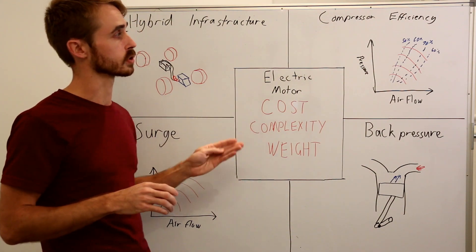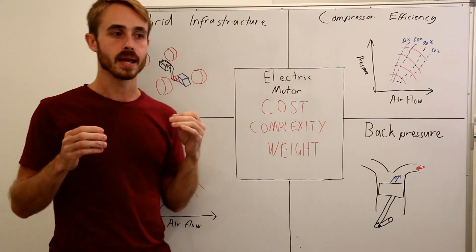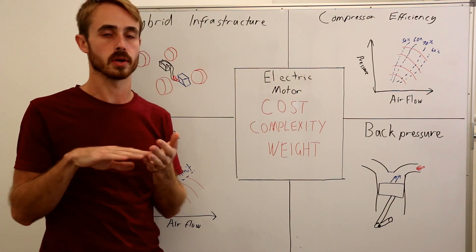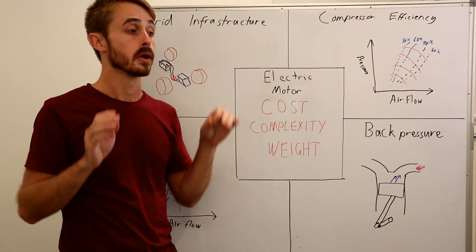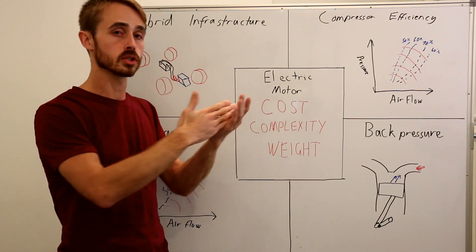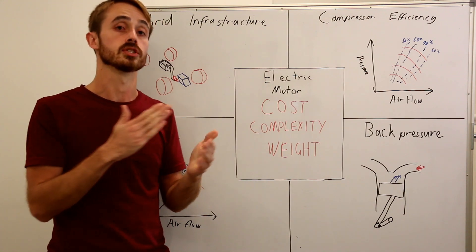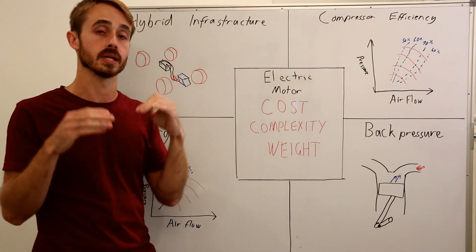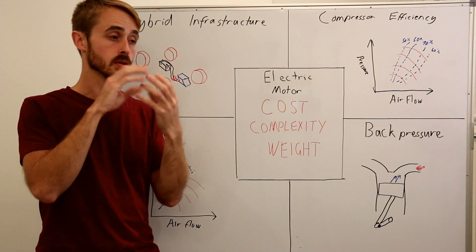The next problem with an electric turbo is compressor efficiency. Now, when you're operating the sweet spot of the turbo, it's going to be the same as any other turbo. But to capitalize on that advantage of spooling the turbo lower down in the rev range, you're going to be working that compressor at an inopportune point in its compressor curves.